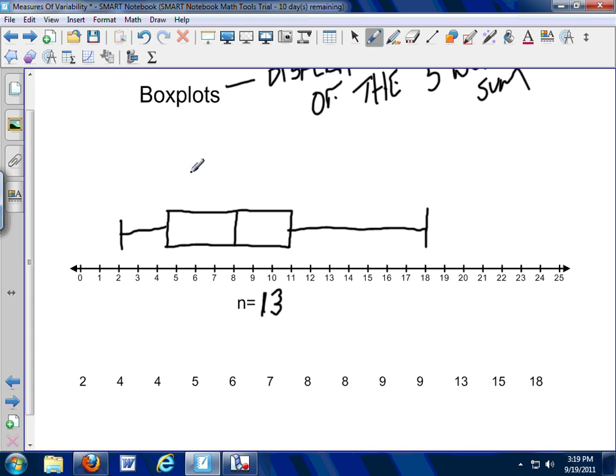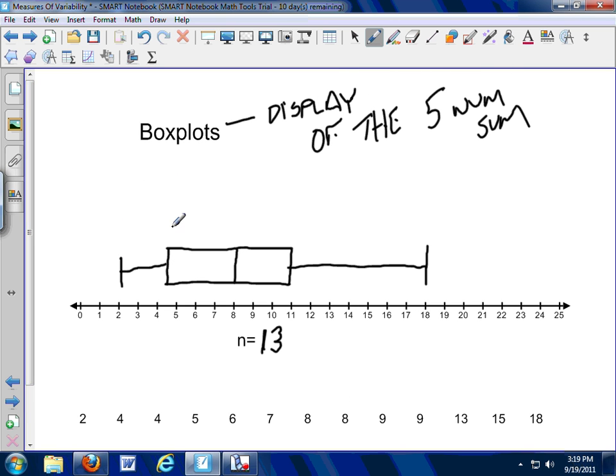Making a box plot, we find, we locate the five numbers in the five number summary. We draw a box around the IQR. This is my IQR. It's in the box. IQR lives in the box. And then the whiskers go out to the min and the max. So, there's a box plot.